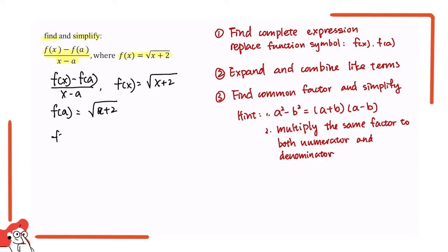And we get equals square root of x plus 2 minus square root of a plus 2 over x minus a. So here this is a little tricky.